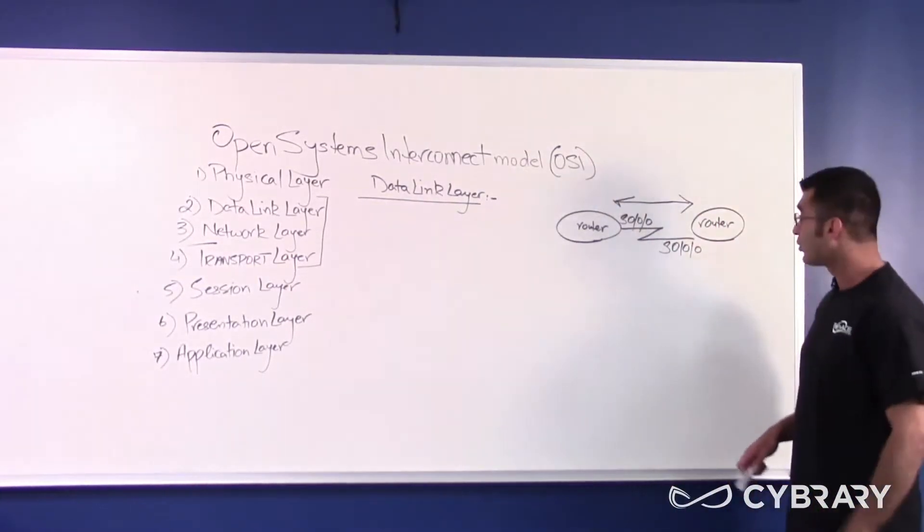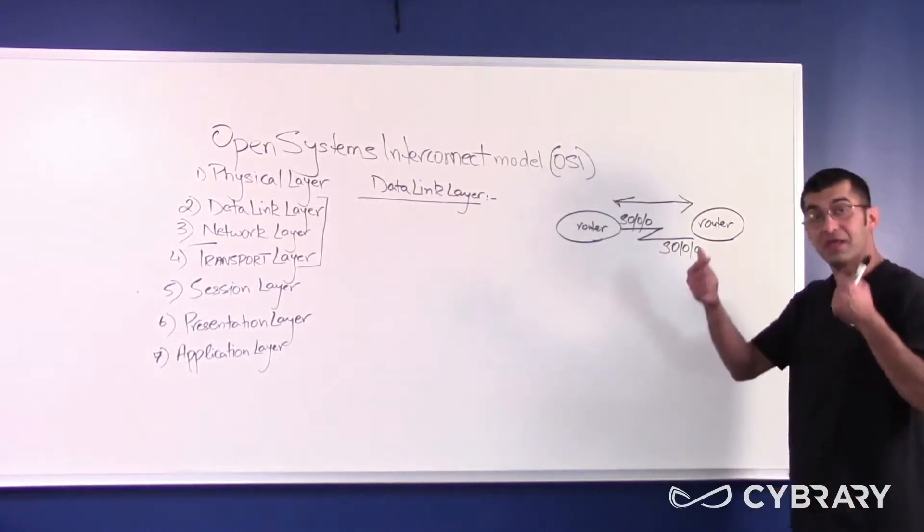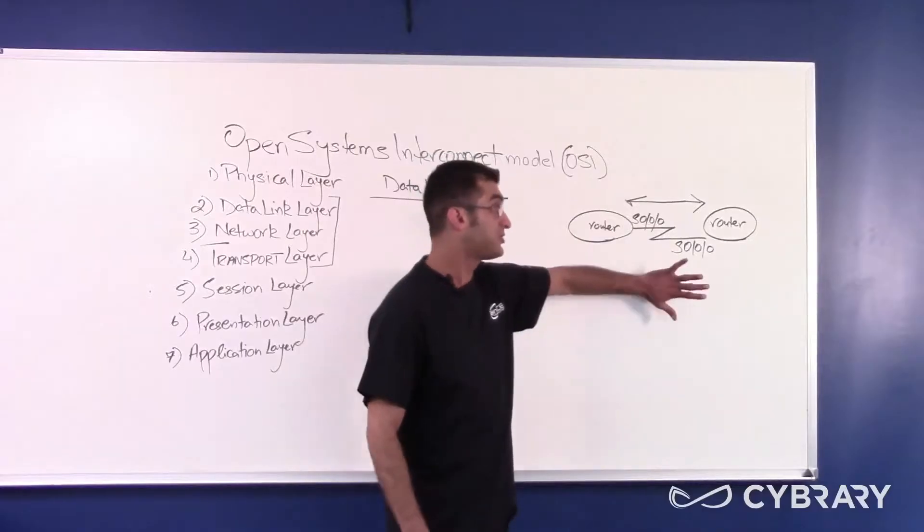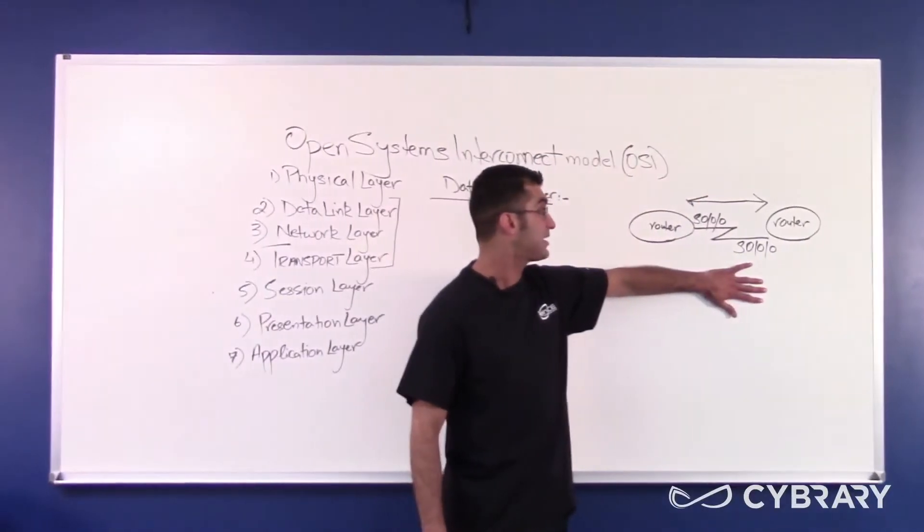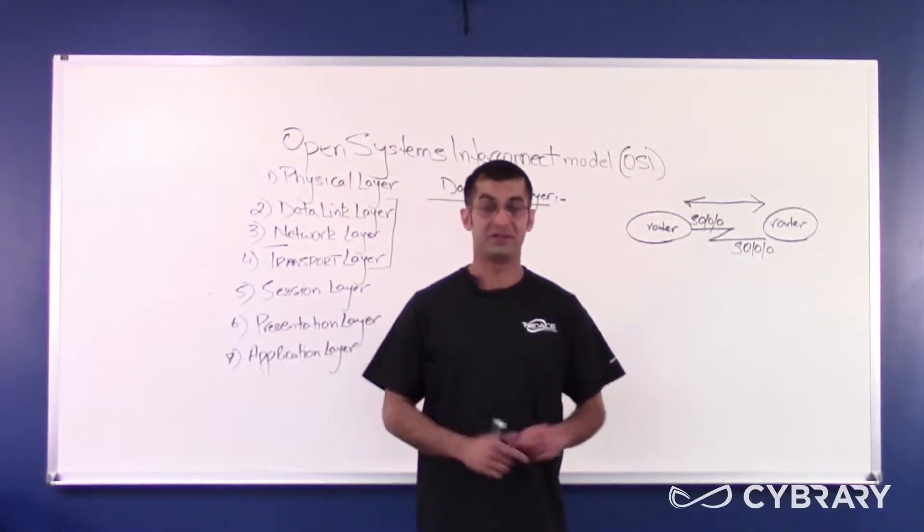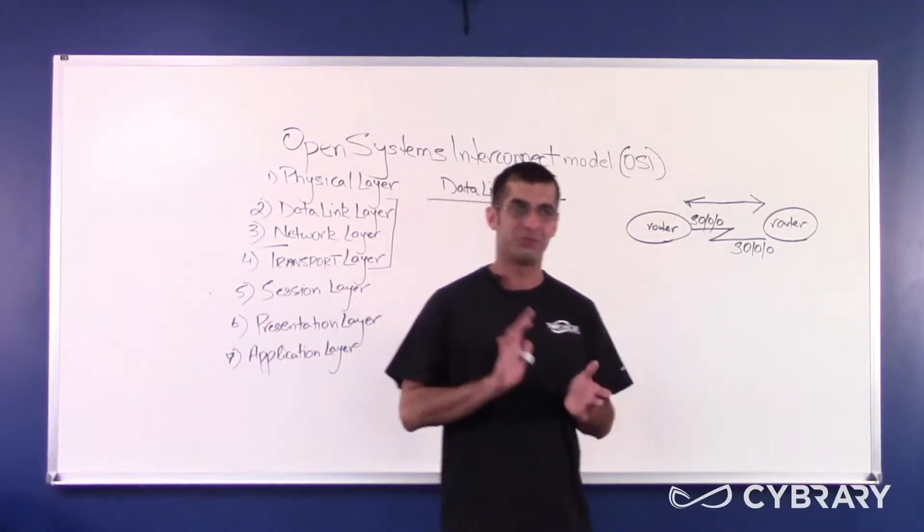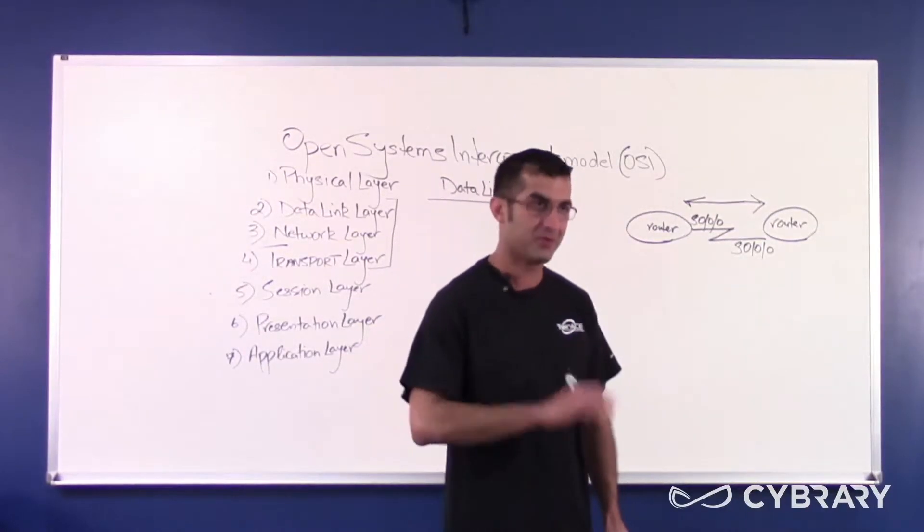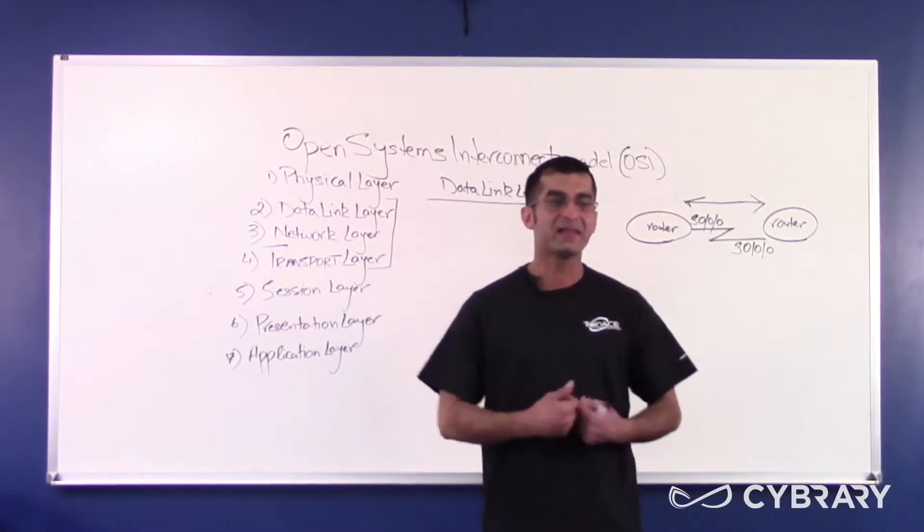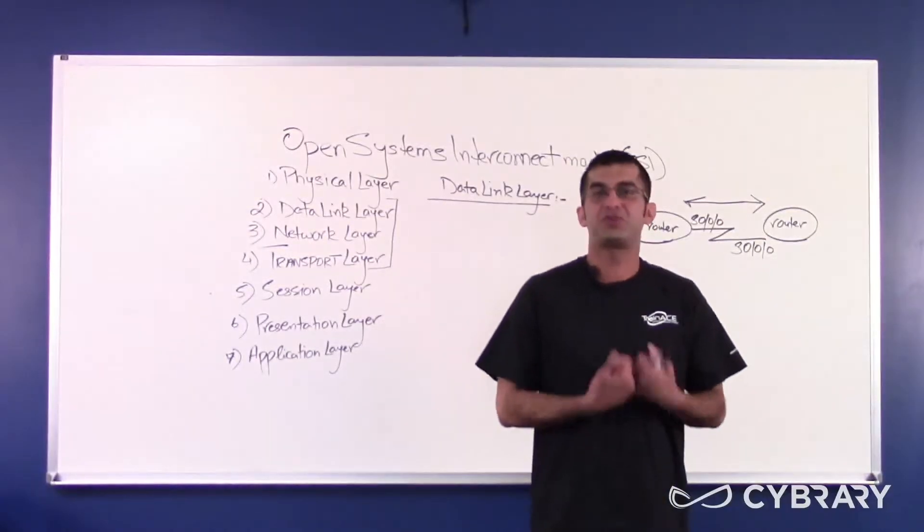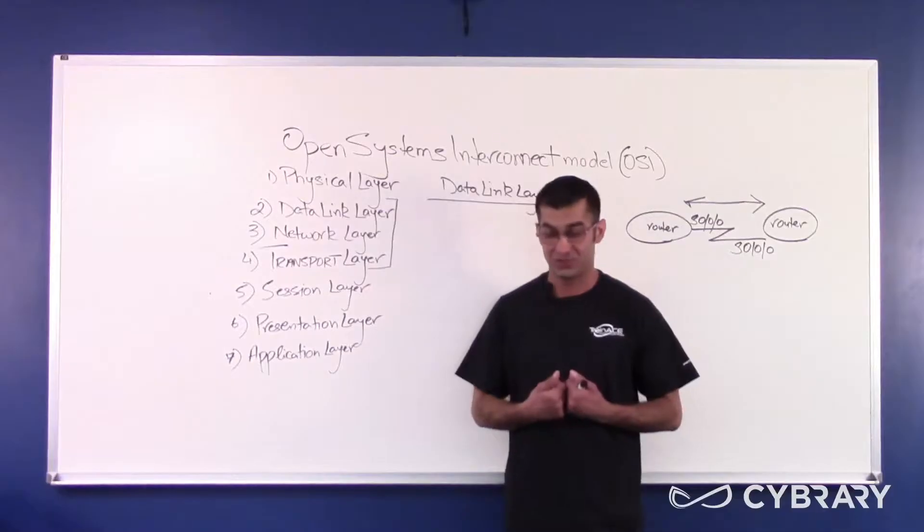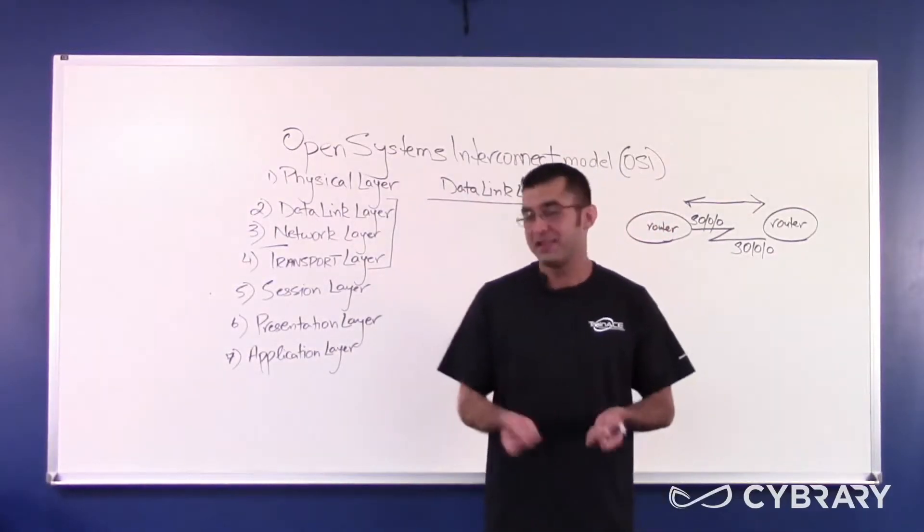Now we understand that the data link layer controls communication on the immediate link, the immediate physical link. Now data at layer 1, if you were to think about the structure of data at layer 1, the data at layer 1 is simply electricity, electrical signals, or changes in voltage.